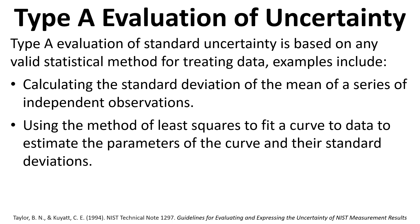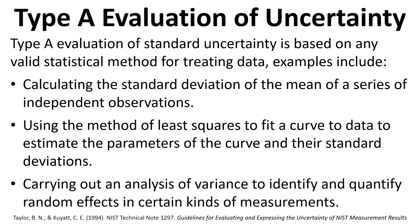We can also use linear regression to estimate parameters that vary. We might have a dependent variable and an independent variable, plot a graph, and then the line of best fit might tell us information from the intercept and the gradient. We can use statistical methods to get the uncertainty in those parameters, and we could also carry out an analysis of variance to identify and quantify random effects. These are three examples for a Type A evaluation.